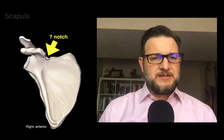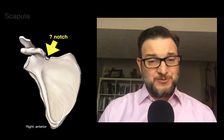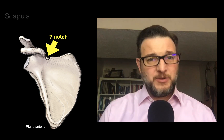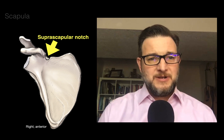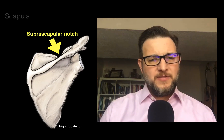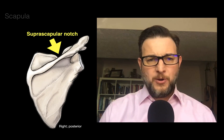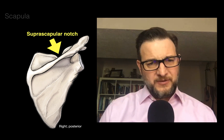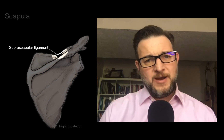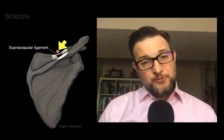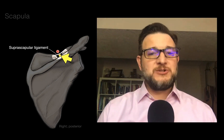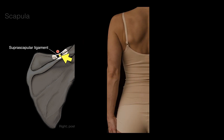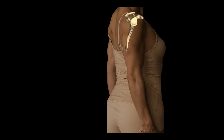Now let's go to this notch. It's on the top of the scapula, so let's call it the suprascapular notch. There it is in anterior and posterior views. On the suprascapular notch, there's a ligament called the suprascapular ligament that goes across. The suprascapular artery goes above the ligament, and through the newly formed foramen, the suprascapular nerve passes through.